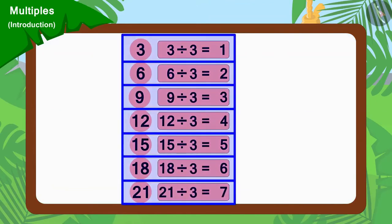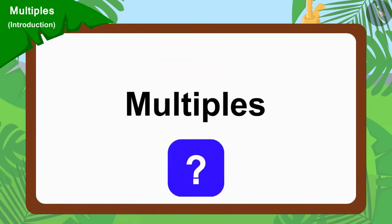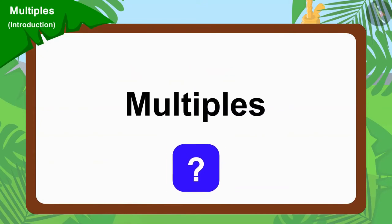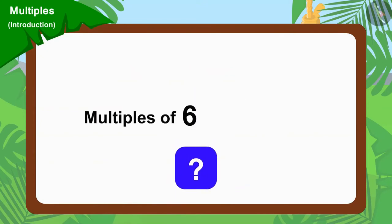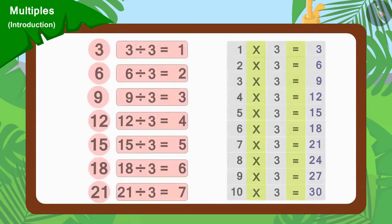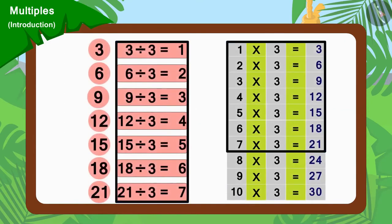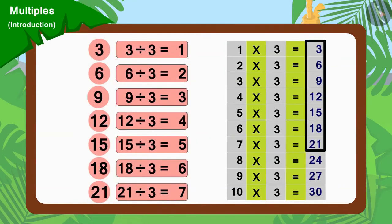These numbers are multiples of 3. Do you know another interesting thing about multiples? We can find the multiples of any number from its multiplication table. For example, if you look closely, you will find all these numbers in the multiplication table of 3.